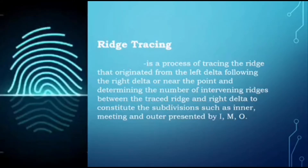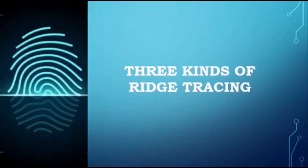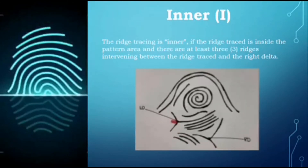To deeply understand this topic we will discuss the rules of ridge tracing, but right now we focus on the three kinds: inner, outer, and meeting. The inner is the first of the three types. The ridge trace is inside the pattern area, and there are at least three ridges intervening between the trace ridge and the right delta. To begin ridge tracing we must first identify and locate the two deltas.